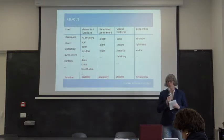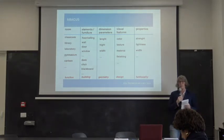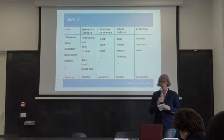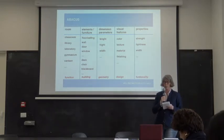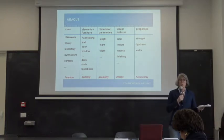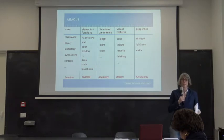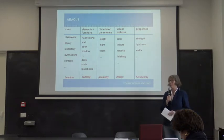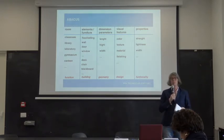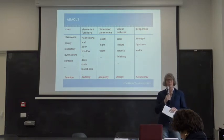We also asked students to build an abacus. Each group of students had to choose a kind of room: classroom, library, laboratory, gymnasium, and canteen. In reality they could choose different rooms, but at the end they chose these — also based on what they had seen in the high schools they visited, choosing rooms where they found some problems or some nice solutions in reality.